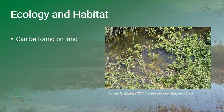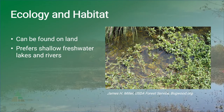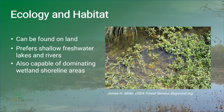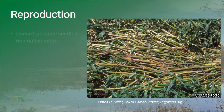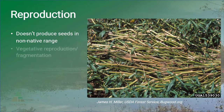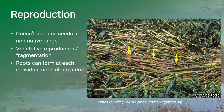Alligator weed can be found on land and cultivated moist soils, but it primarily thrives in shallower areas of freshwater lakes and rivers, as well as on wetland boundaries along the shoreline. While the plant is able to produce viable seeds in its native range, part of what makes alligator weed so problematic in the U.S. is its use of vegetative reproduction. Roots are able to form at each node found along the stem, which makes it easy for a single plant fragment to float away from the parent infestation and form a new colony all its own.